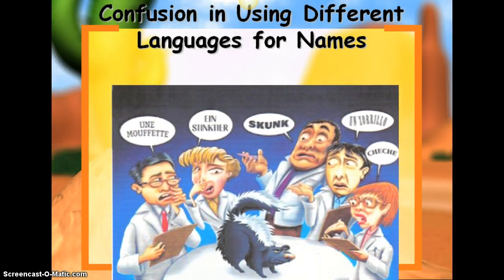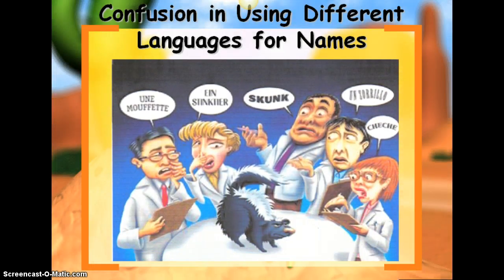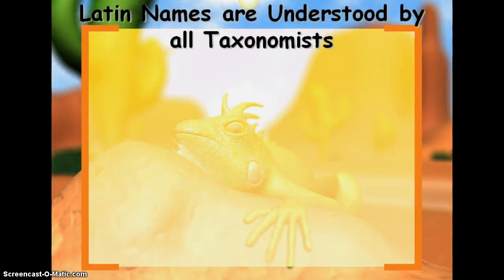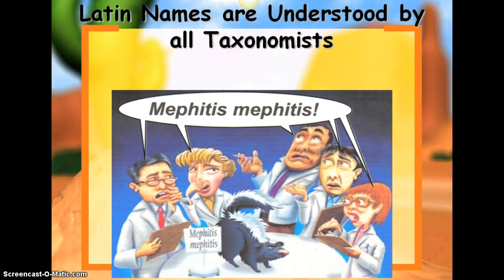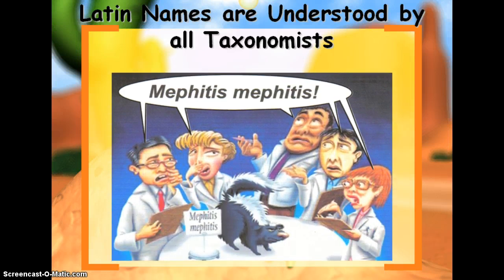There can also be confusion using different languages for names. So instead of just calling it a skunk, we use a genus and species name. For a skunk, that is Mephitis mephitis.